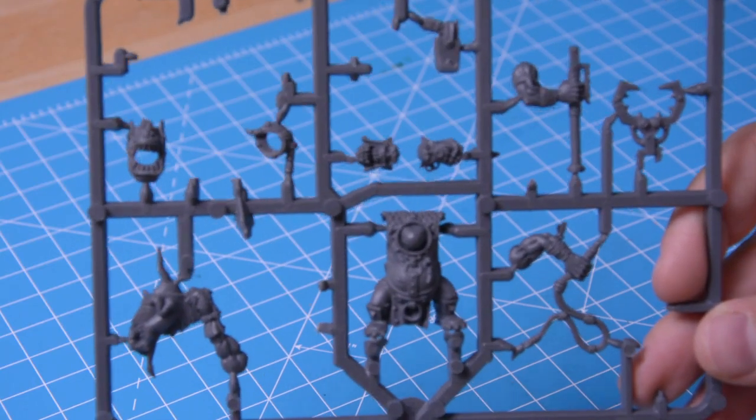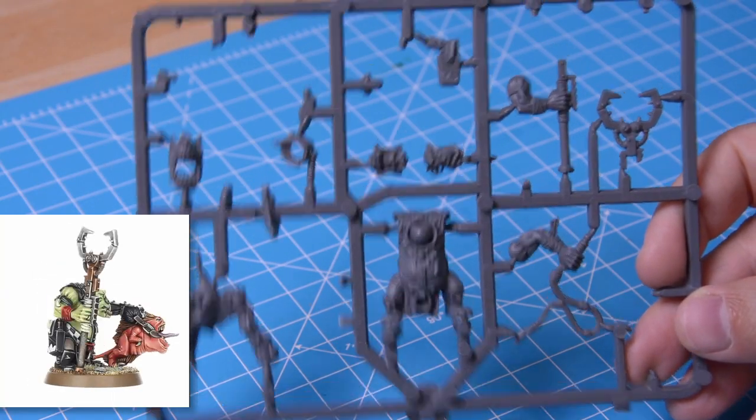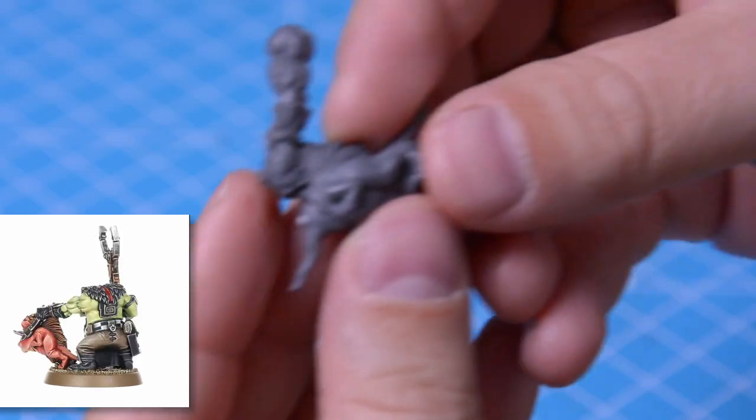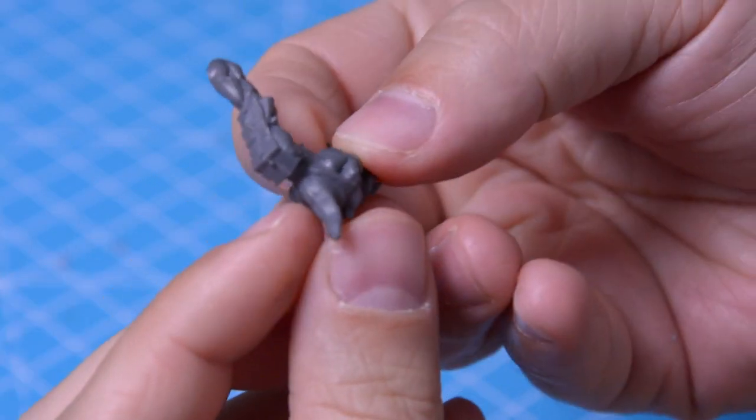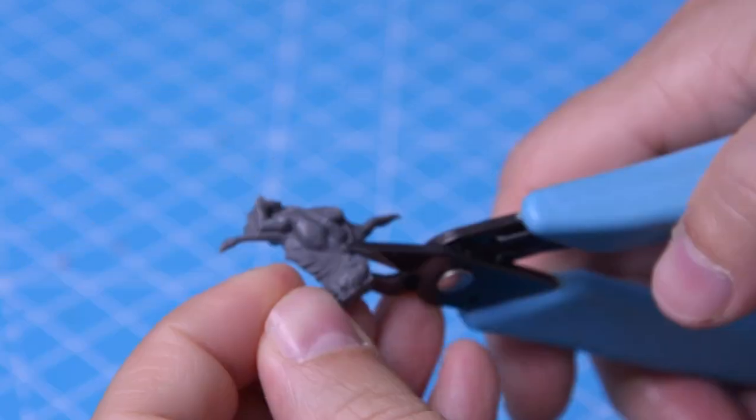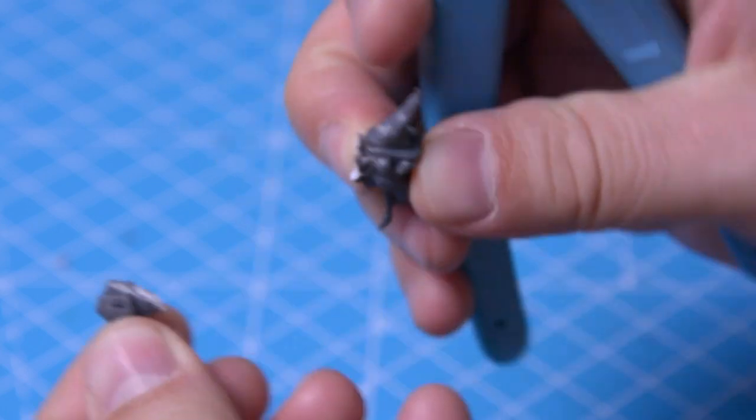I had the idea of using this orc, Runt Herder, as the basis of a conversion. This guy is holding a squig in his left hand, but we're gonna swap that out. I use my cutters to remove the main bulk of the squig, and then I use my knife to clean up the rest.